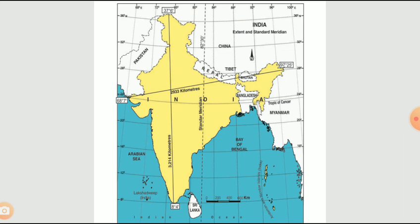Starting from the southern tip of India at 8 degrees 4 minutes up to Jammu and Kashmir at 37.6 degrees, and from Gujarat at 68.7 degrees up to 97 degrees 25 minutes in the east — this is the overall distance from west to east. The width from Gujarat to Arunachal Pradesh is 2,933 kilometers.